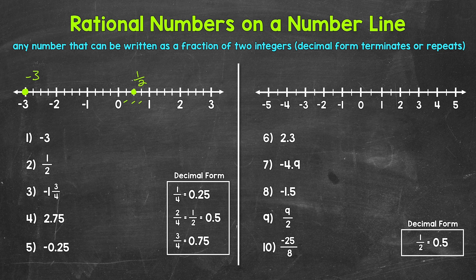Moving on to number three, we have negative one and three fourths. So we need to look in between negative one and negative two. We are to the left of zero. Looking in between negative one and negative two, we have negative one and one fourth, negative one and two fourths (negative one and a half), and then negative one and three fourths — right here.